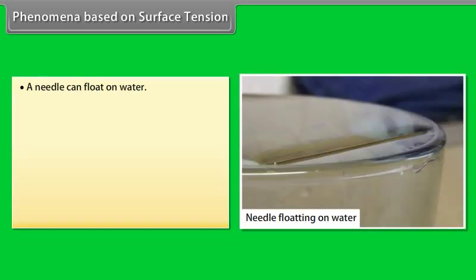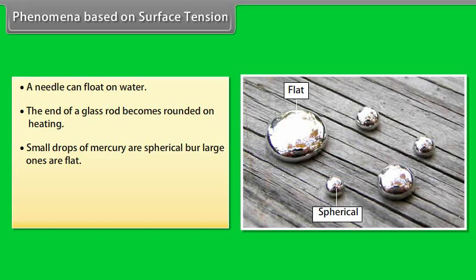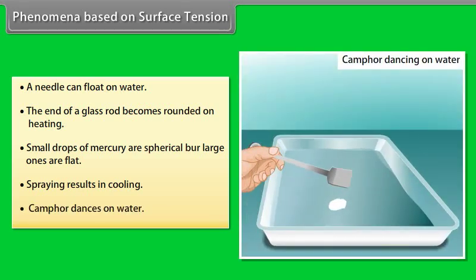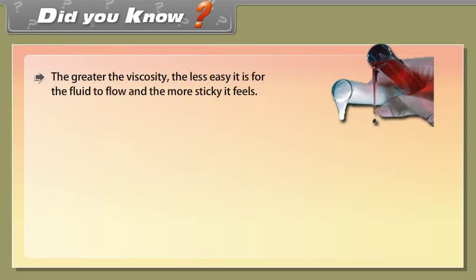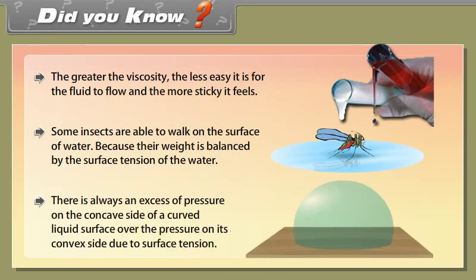Phenomena based on surface tension. A needle can float on water. The end of a glass rod becomes rounded on heating. Small drops of mercury are spherical but large ones are flat. Spraying results in cooling. Camphor dances on water. Did you know? The greater the viscosity, the less easy it is for the fluid to flow and the more sticky it feels. Some insects are able to walk on the surface of water because their weight is balanced by the surface tension of the water. There is always an excess of pressure on the concave side of a curved liquid surface over the pressure on its convex side due to surface tension.